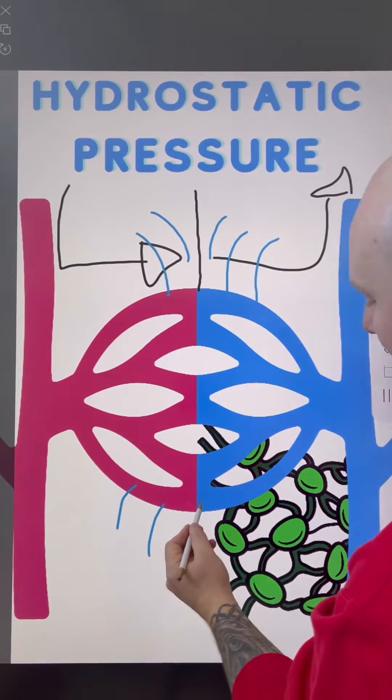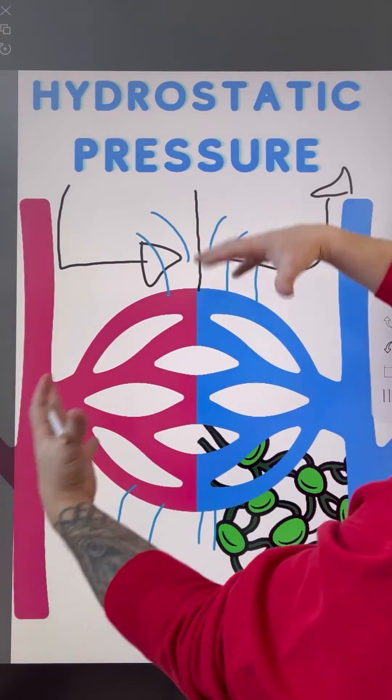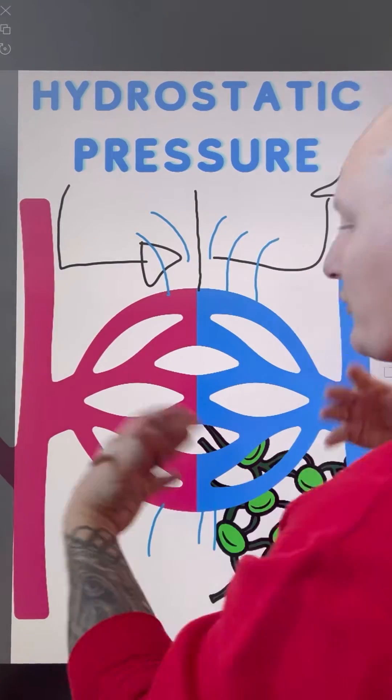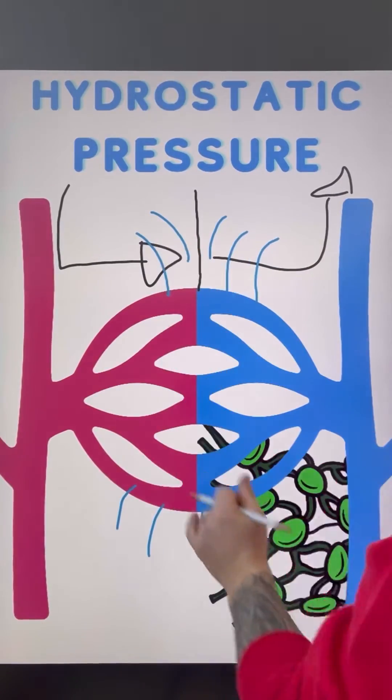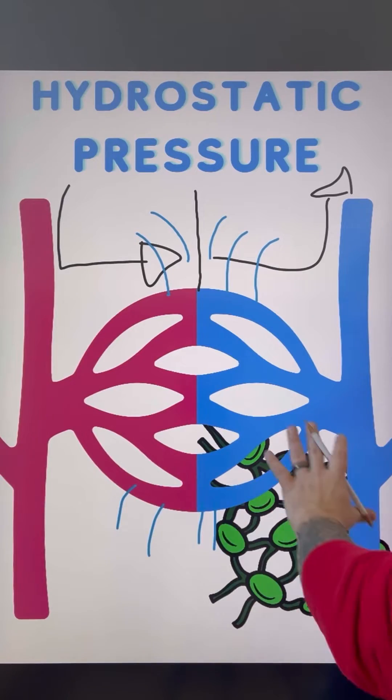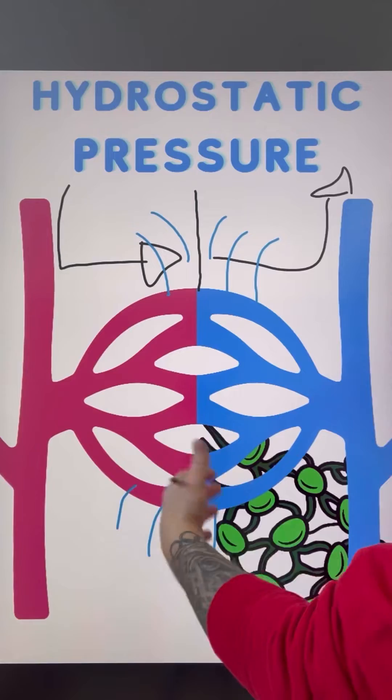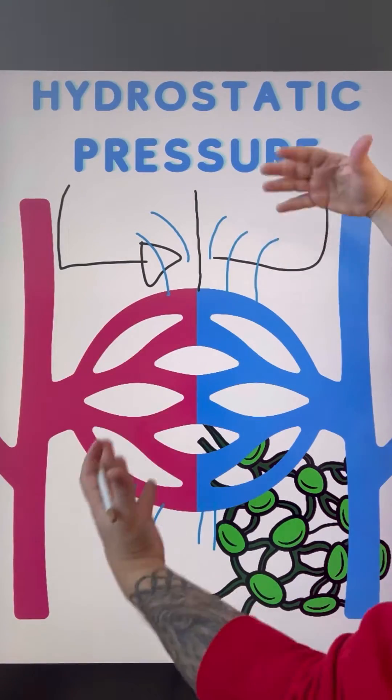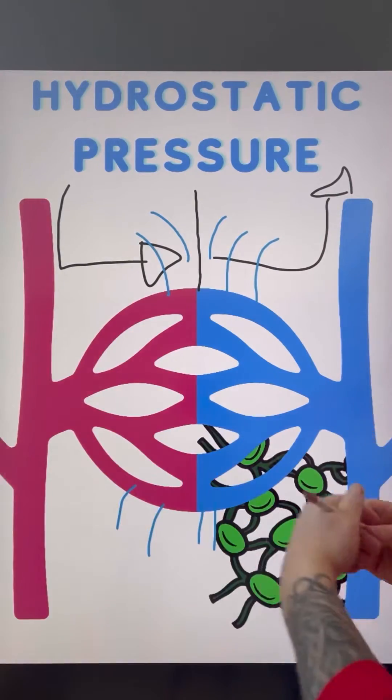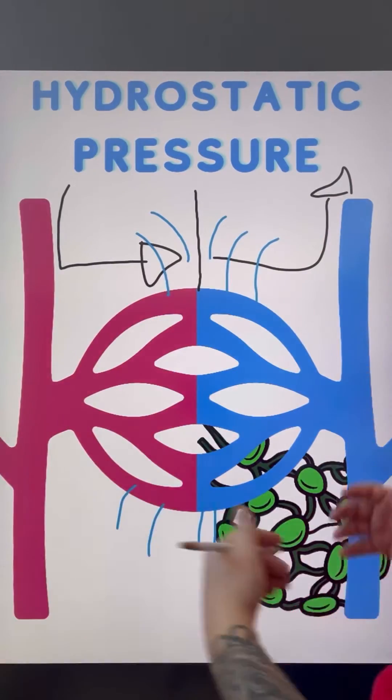So what happens here is that all of this fluid starts to accumulate. Now, this is normal. This is a normal hydrostatic pressure that's happening here. And so what happens in this particular case is that the lymph will actually soak up all that fluid—all the excess fluid that's coming out that we don't want there—and circulate it through the lymph vessels and effectively clean it. And so that's an okay thing.